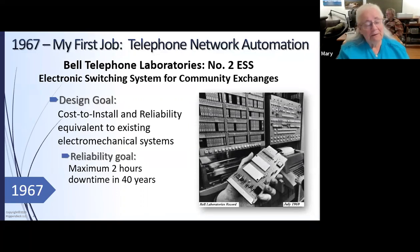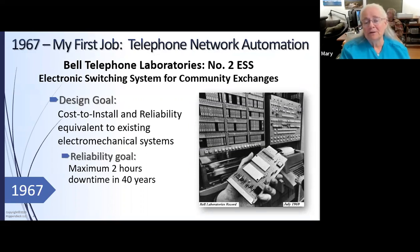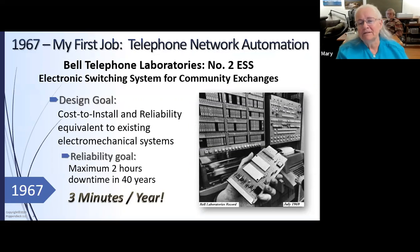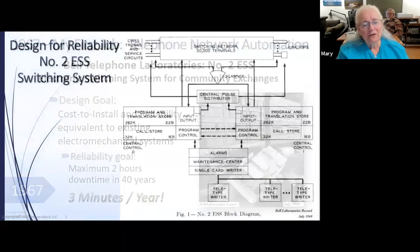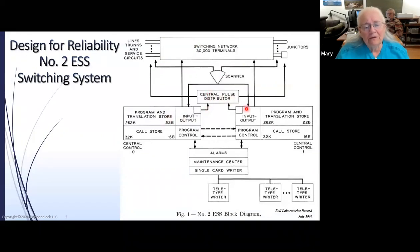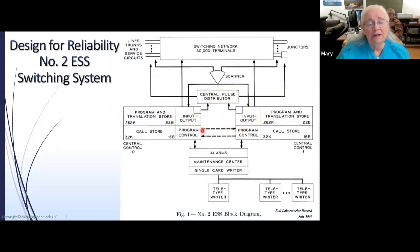That's like three minutes a year — more reliable than five nines. The way we achieved the reliability: there are two processors. All the terminals from the phones come in through a scanner and then into two different computers, which are constantly checking each other to make sure they are doing exactly the same thing — completely duplicated hardware. There was also a place for alarms and maintenance.